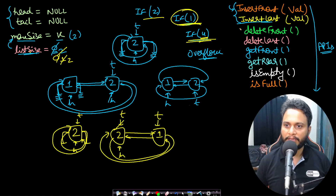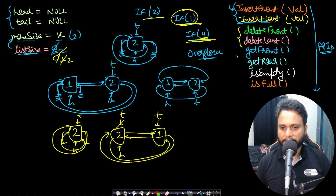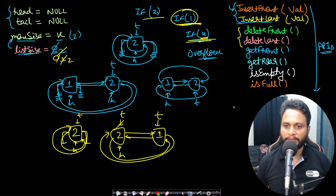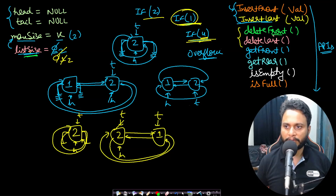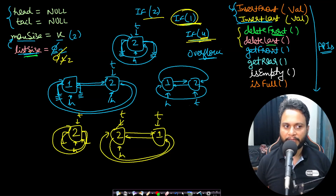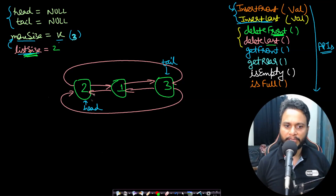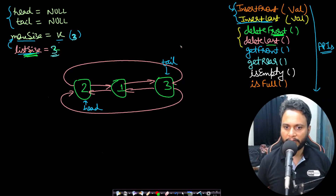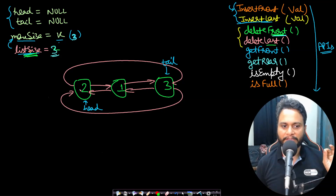Now let's see how to delete values. If the list is empty — list size equals zero — we have an underflow and must return false. This applies whether you're deleting from the front or the last. If list size is greater than zero we can delete. Let's take a scenario where there are three items, list size is 3, and max size is 3.